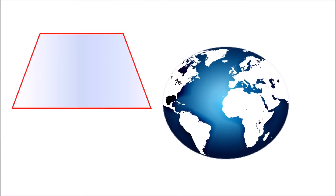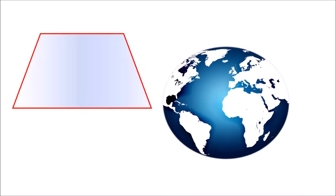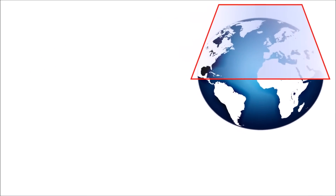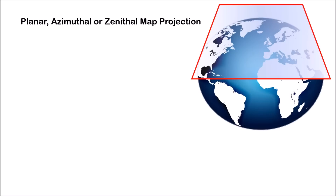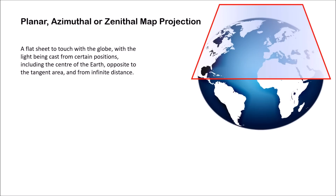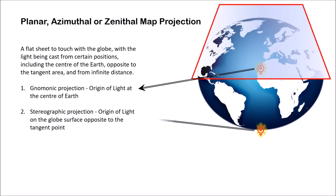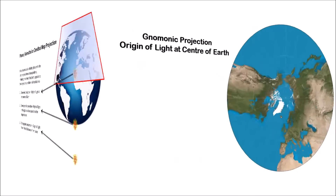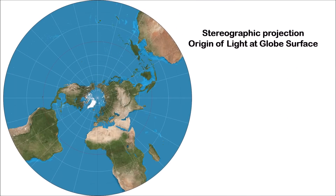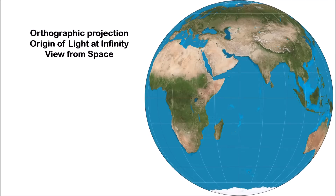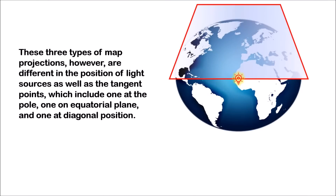Let's look at some popular projections and where they work and where they don't. First is a planar projection, where a sheet of paper is kept on the globe surface. Depending on the placement of the light source, this type of projection has three categories: gnomonic projection, stereographic projection, and orthographic projection. These projections can be varied not only by the position of the light sources but also by the placement of the sheet of paper.